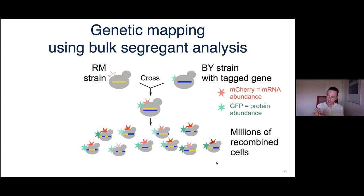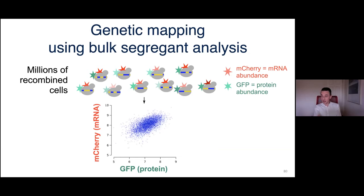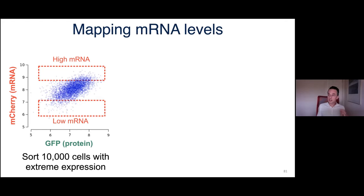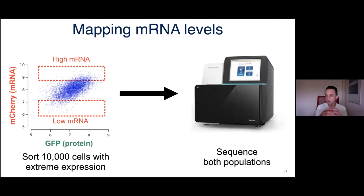He looks at allele frequencies across the genome in the high and low mCherry populations. Across most of the genome there's no difference, but there are deflections indicating loci that influence the gene of interest. For the gene tagged, the local cis region shows a signal, but all other loci are elsewhere — they're trans-acting, which is exactly what the system was designed to map.